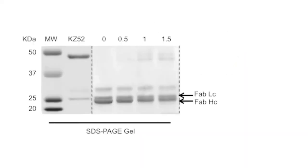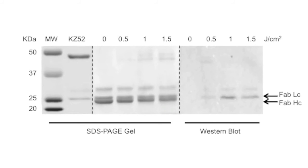The Fab fragment was biotinylated using increasing levels of UV energy and run on SDS-PAGE. The SDS-PAGE demonstrates that the light chain band of the intact KZ52 antibody matches with the light chain band from the Fab fragment at 25 kDa. To show the specific location of the biotinylation on the Fab fragment, a Western blot assay was performed by transferring protein to a nitrocellulose membrane and detecting the biotinylated Fab fragment with HRP-streptavidin. The results of the blot indicate that biotinylation of the Fab fragment at the nucleotide binding site is occurring specifically at the light chain.